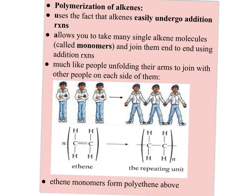This happens because alkenes easily undergo addition reactions. In this case, it allows you to take many single alkene molecules — the exact same molecule — and when the double bond opens up, it joins to another monomer, another alkene molecule, and just continues to join end to end. The analogy often used is it's like people unfolding their arms to join with other people on either side of them.